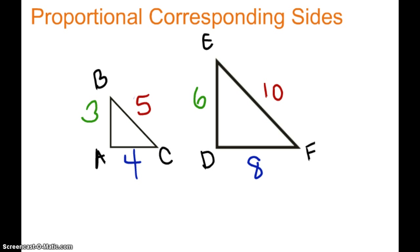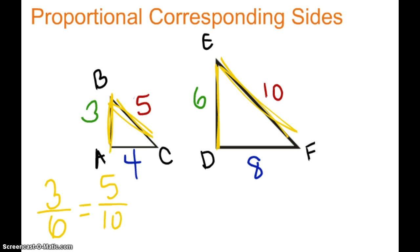And lastly, proportional corresponding sides. Corresponding again means same position. We can see that side AB and side DE are corresponding, and we need to check that 3 to 6 has the same proportion as BC to EF, which is 5 to 10. Is it true that 3 to 6 equals 5 to 10? Well, 3 sixths is one half, and 5 tenths is also one half. So these sides are proportional.